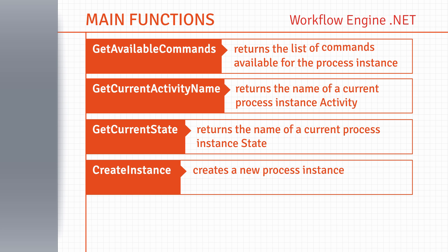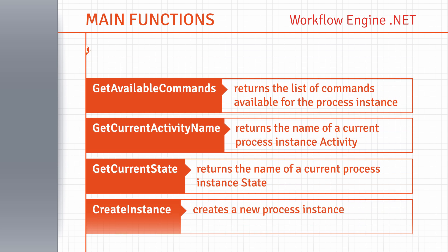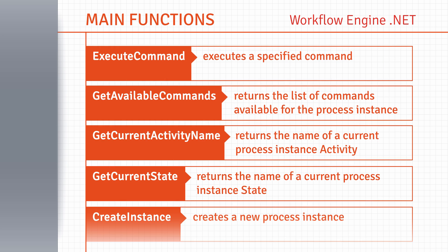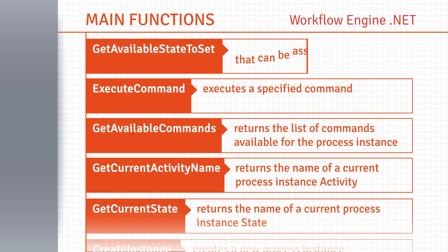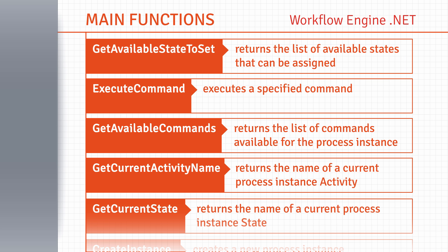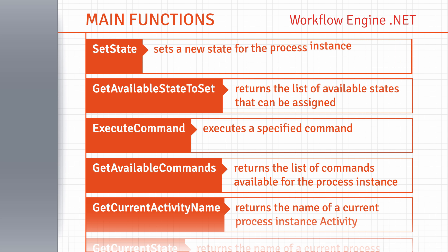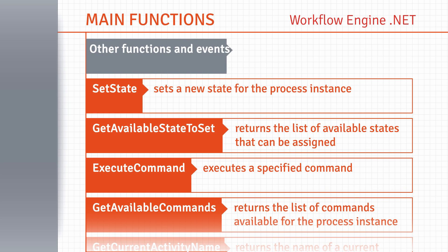GetAvailableCommands returns the list of commands available for the process instance. ExecuteCommand executes a specified command. GetAvailableStateToSet returns the list of available states that can be assigned to the process instance. SetState sets a new state for the process instance. Workflow Runtime also contains other functions and events that can be used to interact with a process instance.